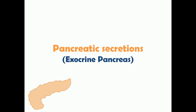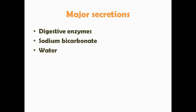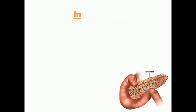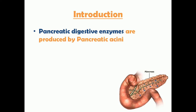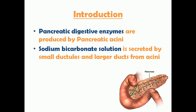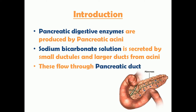Welcome to MedWits Made Simple. In this video we're going to see about the exocrine pancreatic secretions. The major secretions of the pancreas are digestive enzymes, sodium bicarbonate, and water. The pancreatic digestive enzymes are produced by pancreatic acini, while sodium bicarbonate solution is secreted by small ductules and larger ducts arising from the acini. So bicarbonate is not secreted from the acini — it is secreted from the ducts.